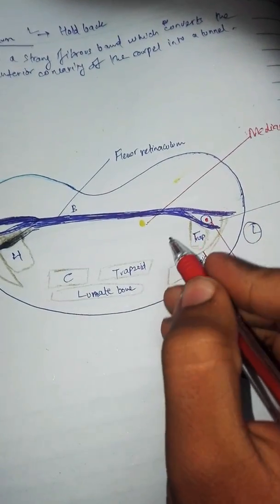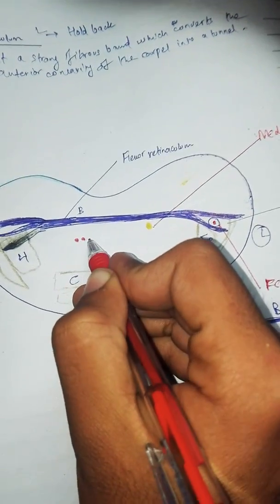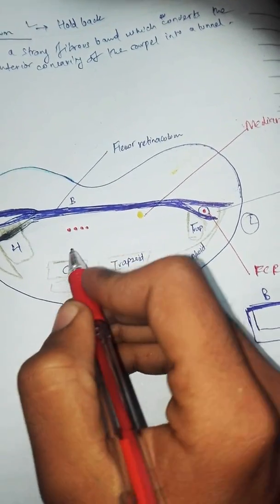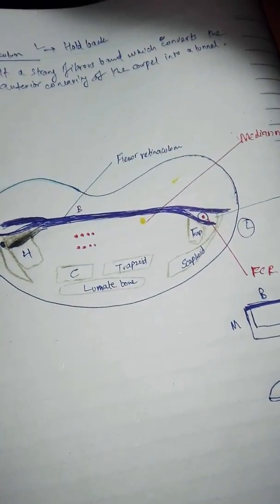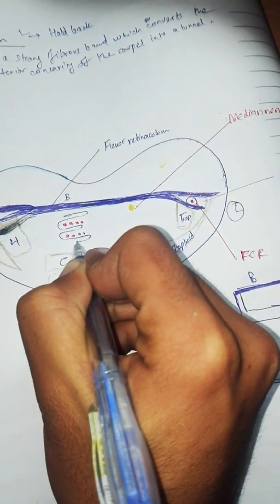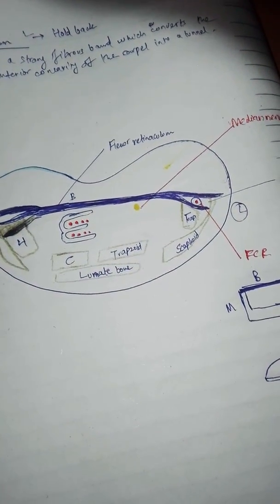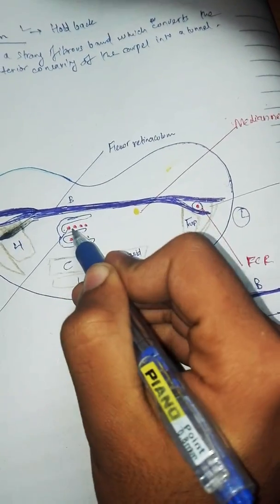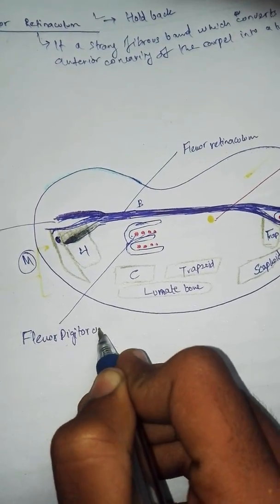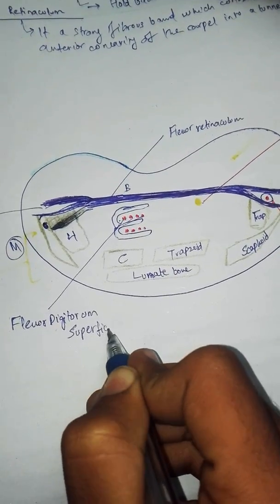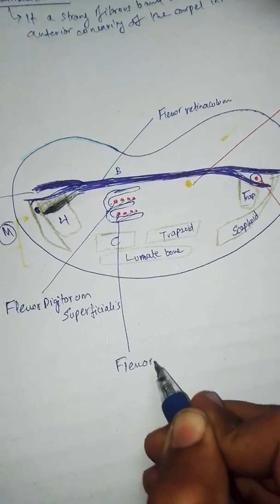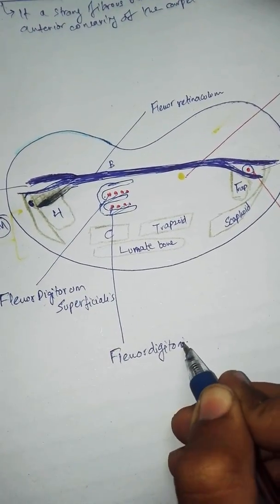Then there are four tendons on the above surface which are somewhat superficial, and there are four other tendons below. These are covered by a synovial sheath. The upper four tendons are of flexor digitorum superficialis, whereas the lower four tendons are of flexor digitorum profundus.